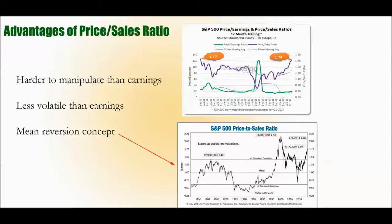Valuation indicators like price-sales, price-earnings, and price-cash-flow are useful when combined with another tool. Investor Ken Fisher likes to combine price-sales with price-earnings, debt-to-cash, and EPS growth. So a lot of these ratios together can give a clear idea of how a company is operating. The key advantages are: it's harder to manipulate than earnings, it's less volatile than earnings, and the mean reversion concept applicable to all valuation ratios applies here too — at least that's what back-tested data suggests.